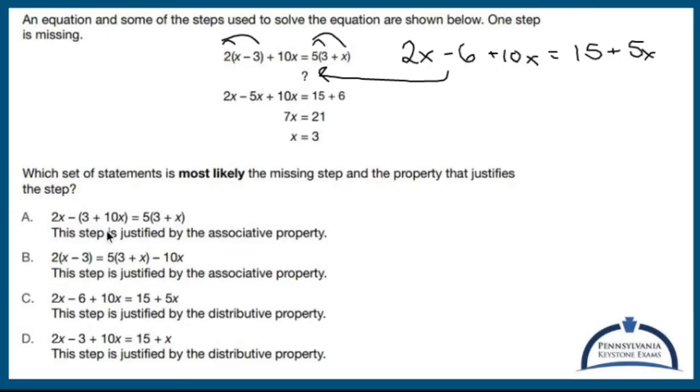Alright, well, it looks like it's going to be C because 2x minus 6 plus 10x, 2x minus 6 plus 10x equals 15 plus 5x, 15 plus 5x. And it's used by doing the distributive property. So C is my guy right there.